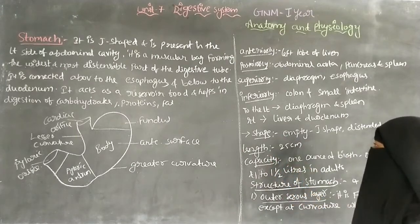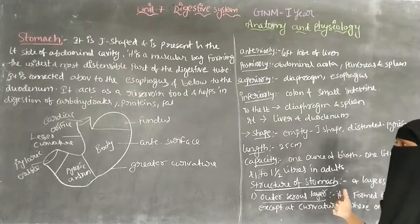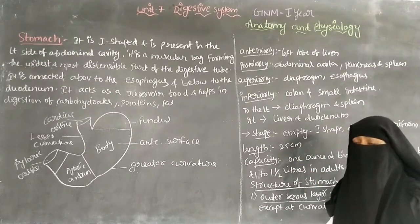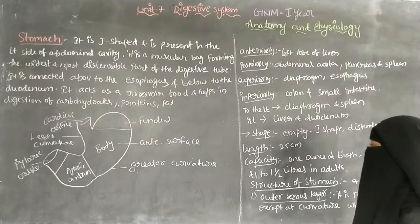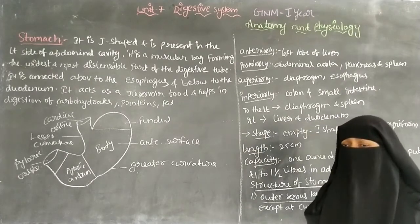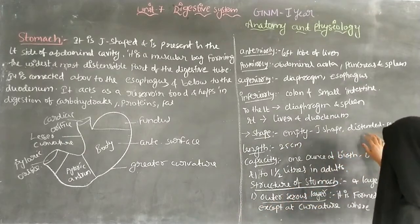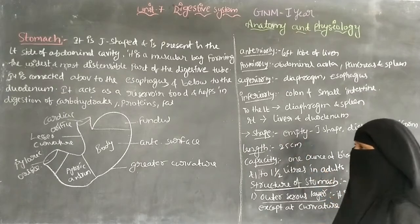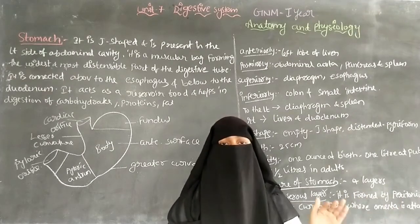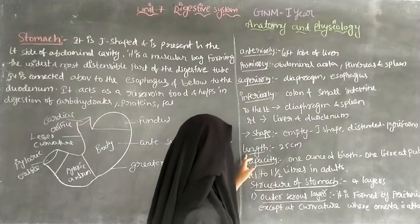Regarding the shape of the stomach: when the stomach is empty it is J-shaped. When distended after taking food, it becomes pyriform shape — pyriform shape means pear shape or B-shape.